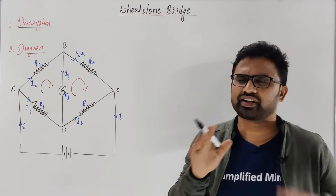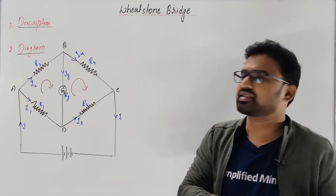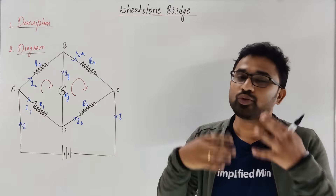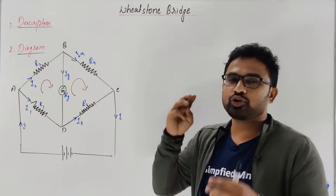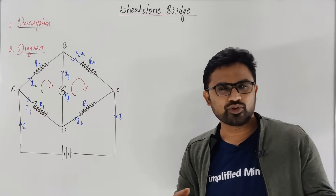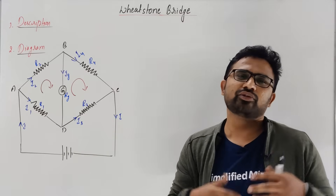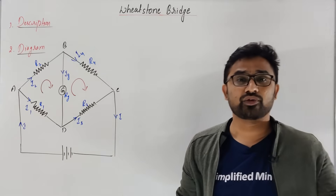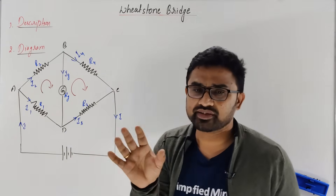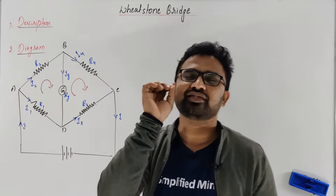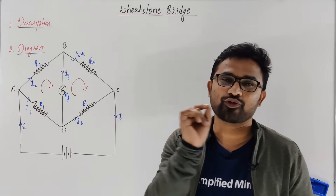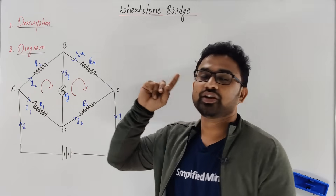What is Wheatstone Bridge? It's very simple — it's a network of resistors. Using this, you can find unknown resistance. By knowing three resistances, one unknown is there and you can find it out. Trust me, you'll get a lot of questions in competitive exams for Wheatstone Bridge.